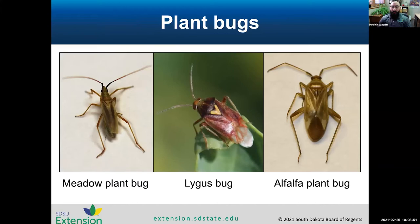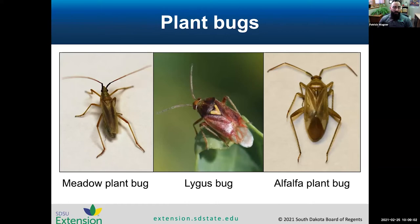Moving on to plant bugs — there are three you'll often see in an alfalfa field: the meadow plant bug, the lygus bug, and the alfalfa plant bug. The meadow plant bug is not really something to worry about; you'll see it at field edges or in grass hay/alfalfa mixes, as it feeds on grasses and won't really affect the alfalfa. It's the lygus bug and the alfalfa plant bug that we need to watch for.